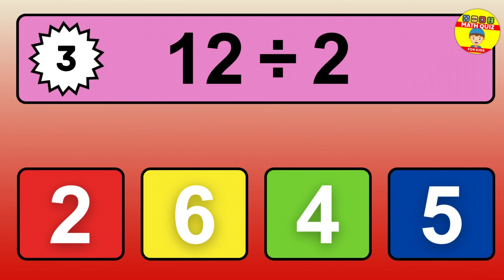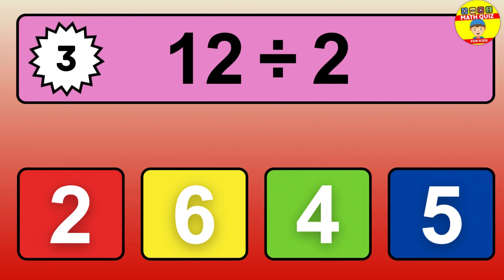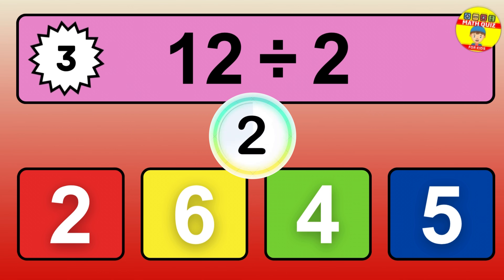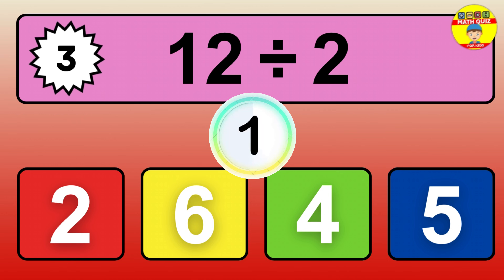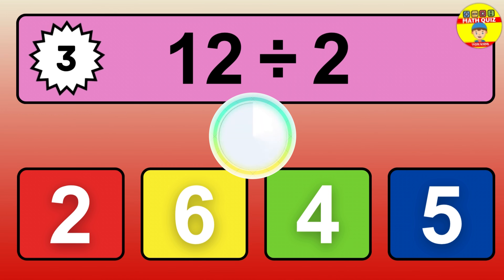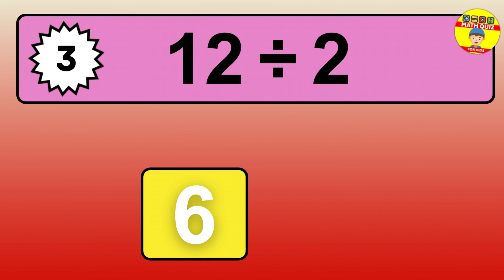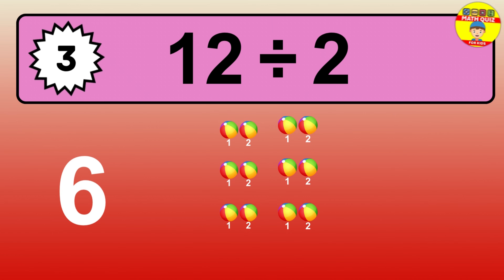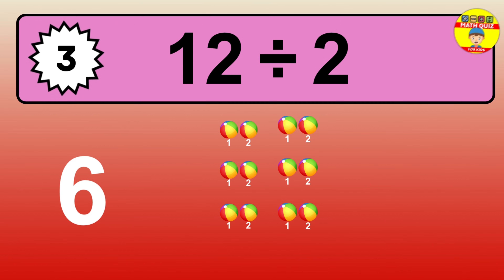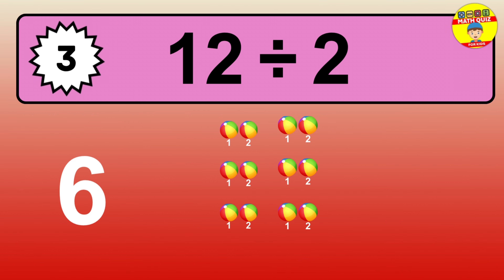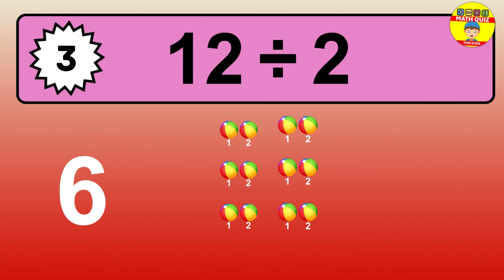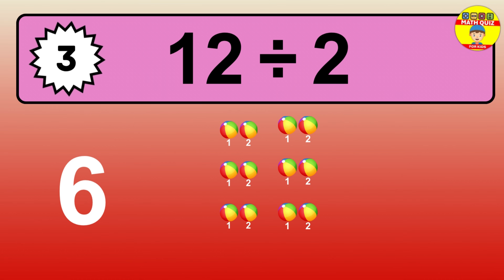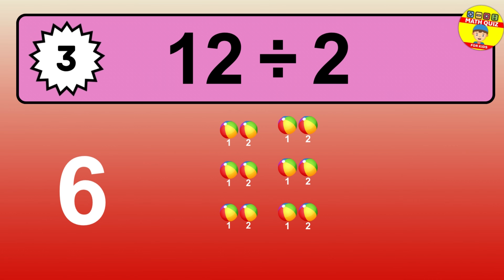12 divided by 2 is… time to think. Let's go to the solution. Divide the number 12 by 2. Each group contains 2 units, so dividing 12 by 2 results in 6 equal groups. Thus, the result is… 12 divided by 2 equals 6.